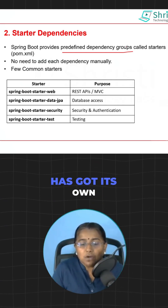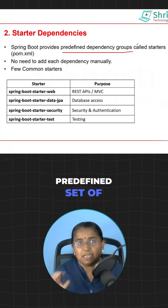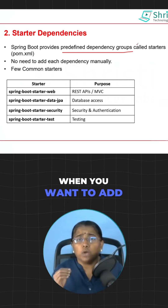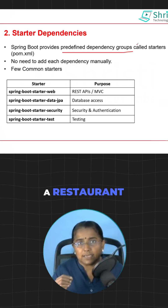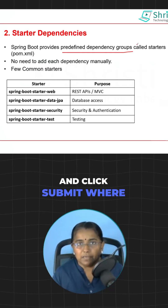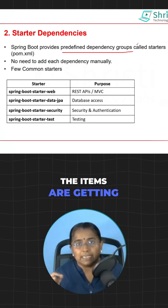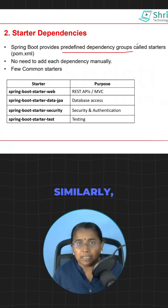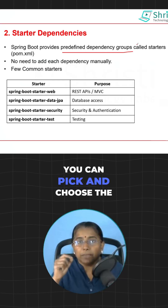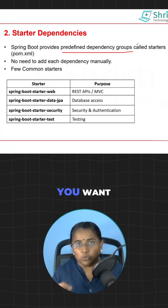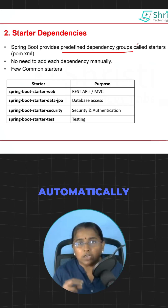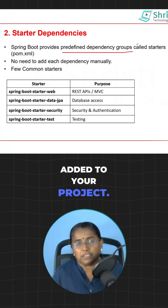Spring Boot has its own predefined set of starters. It is similar to ordering from a restaurant — you pick and choose the menu items and click submit, where the items are added to the cart. Similarly, when you create a Spring Boot project, you can pick and choose the dependencies you want, which are picked from the starter dependencies and automatically added to your project.